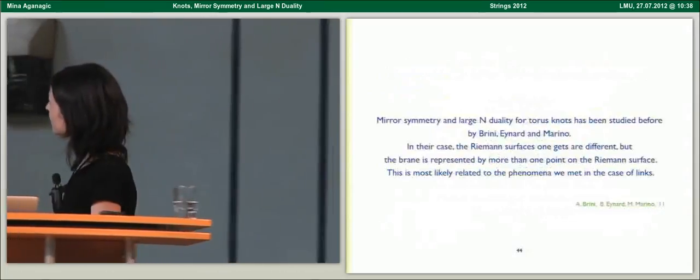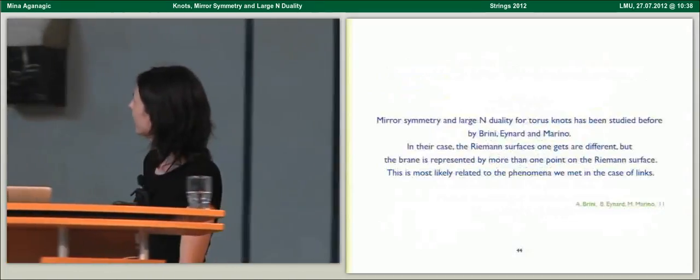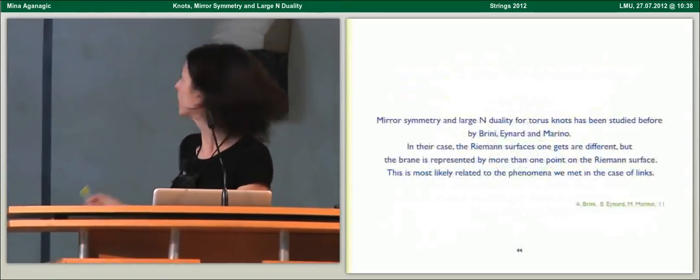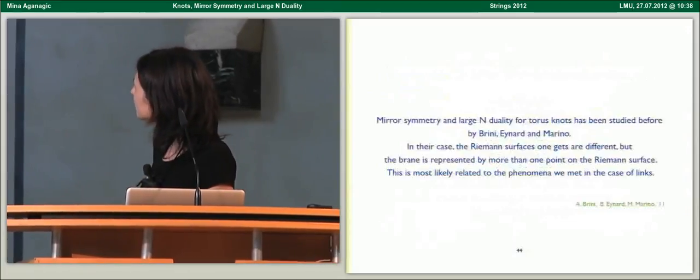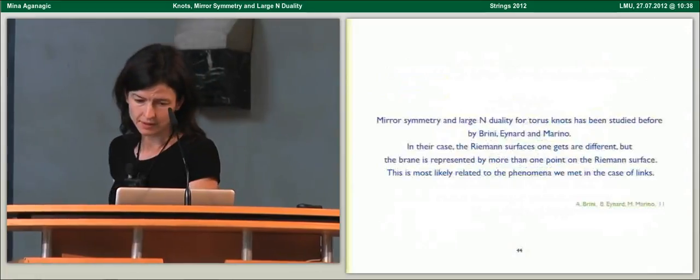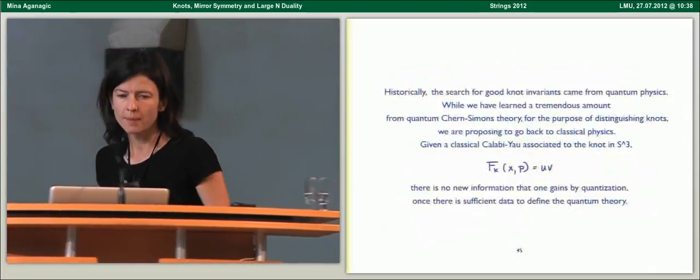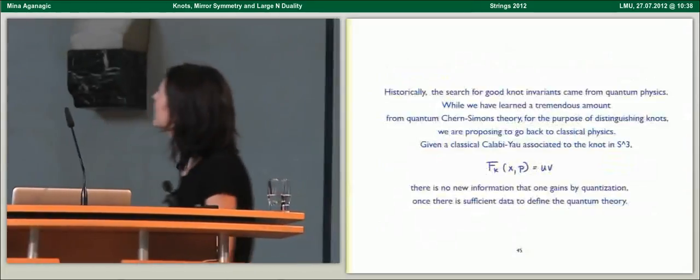Mirror symmetry and large N duality for torus knots has been studied before also in a very nice paper by Brini, Eynard, and Marino. In their case, they get slightly different Riemann surfaces related to the fact that a single brane is actually represented by more than one point on the Riemann surface. This is probably related to the story we met in the context of links. They just gave a different description, but the ideas they use are actually the same and very beautiful.